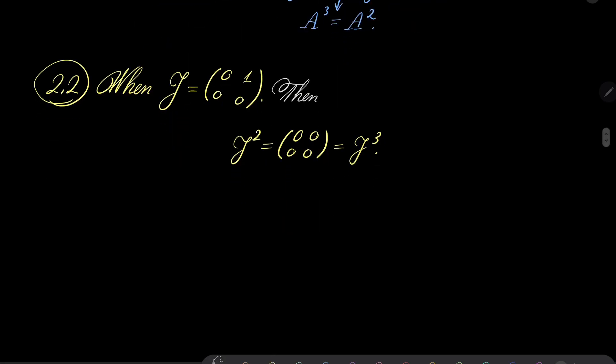And this, of course, means we can multiply once again by P inverse. And this, of course, means that A cubed equals A squared. And now we have to consider every possible case. And in every case, A cubed equals A squared. So we are done. And that is it.